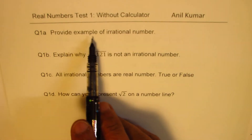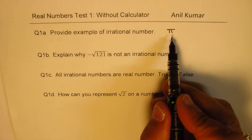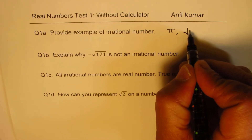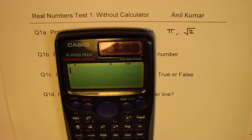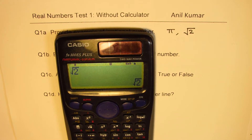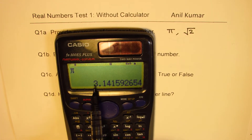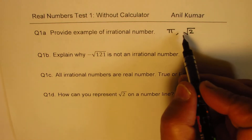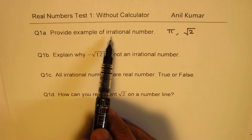Question 1 asks us to provide examples of irrational numbers. Pi is an irrational number — you cannot get the exact value of pi. Another example is the square root of 2. If you try to find its value, you get a non-terminating decimal: 1.4142135..., which has no repeating pattern. Similarly, pi in decimal form is also non-terminating. Most square roots that cannot be written as integers, and many other numbers, fall into the category of irrational numbers.